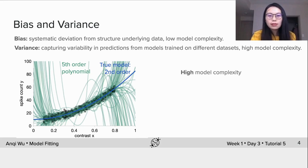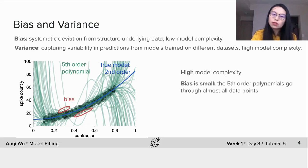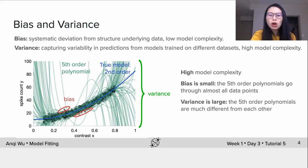Different from the linear case, the fifth order polynomial model has pretty high model complexity. The polynomials go through almost all data points. Thus the bias is small. But these polynomial fits are much different from each other. Therefore the variance is quite large. Hopefully by now you will have a better understanding about bias and variance.